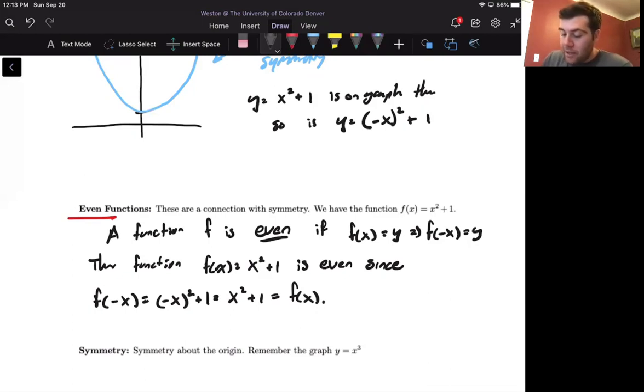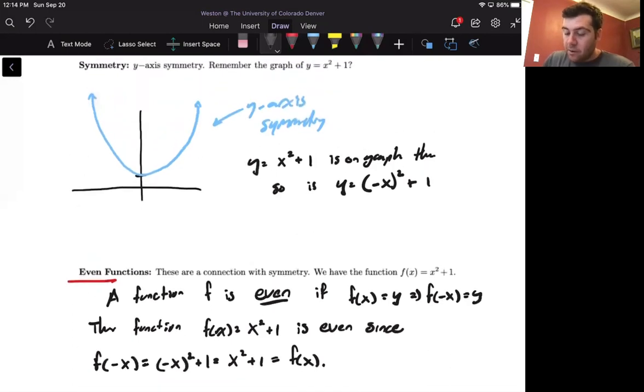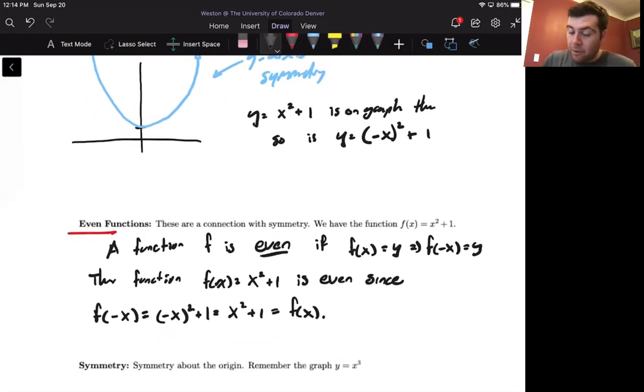If we think about it, this is really just the same property that we had for symmetry on a graph. So if a function is even, then it has symmetry about the y-axis.